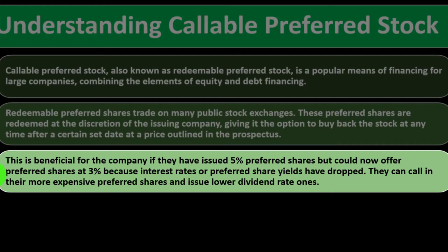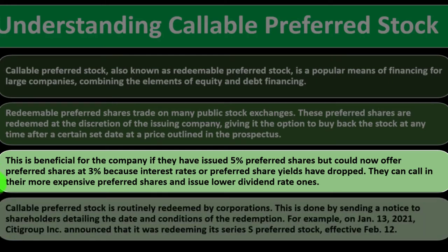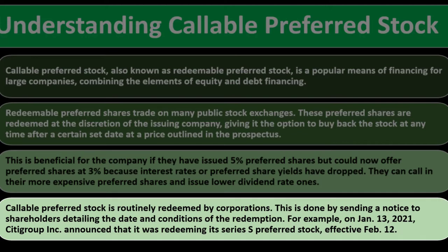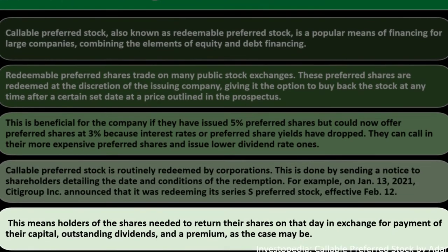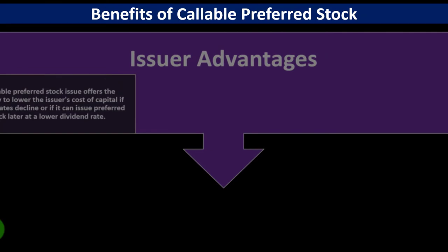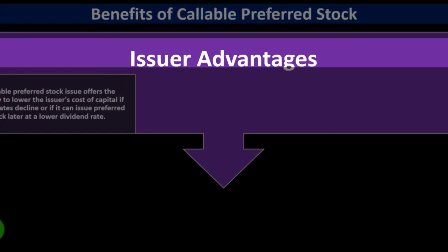Callable preferred stock is routinely redeemed by corporations. This is done by sending a notice to shareholders detailing the date and conditions of the redemption. For example, on January 13, 2021, Citigroup Inc. announced it was redeeming its Series S preferred stock effective February 12th. Shareholders needed to return their shares on that date in exchange for payment of their capital, outstanding dividends, and a premium as applicable.